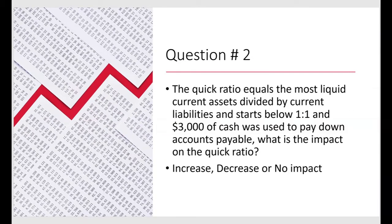At i-75 we always try to anticipate the next question — so what if the ratio started below one to one? Now we look at the quick ratio, which equals the most liquid current assets divided by current liabilities. The quick ratio starts below one to one, and three thousand dollars of cash was used to pay down accounts payable. The journal entry is the same: debit accounts payable, credit cash. Cash is in the numerator and accounts payable is in the denominator, and both go down by the same amount — three thousand dollars.